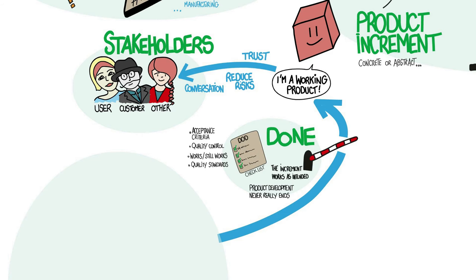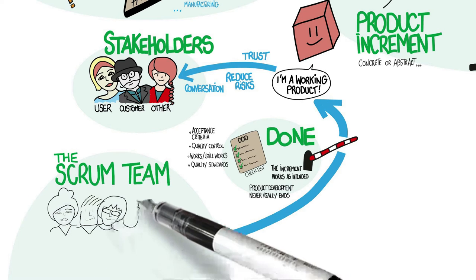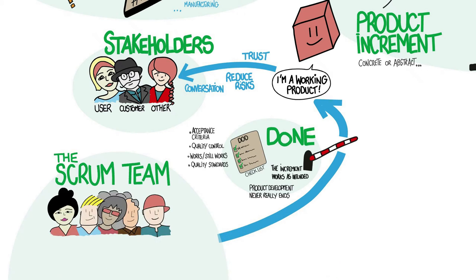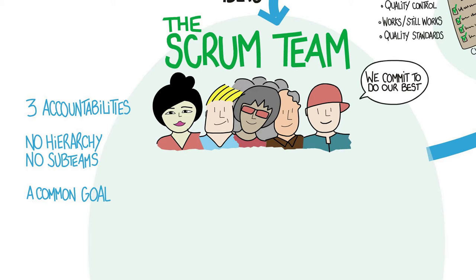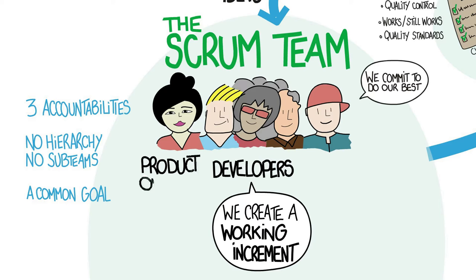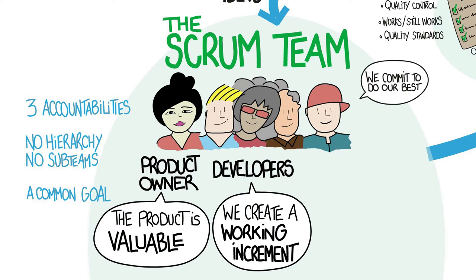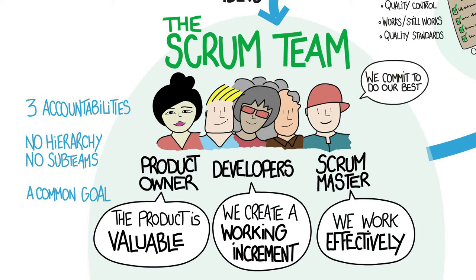The Scrum Team is accountable for creating a valuable working product increment every sprint. Ideas come into the team, the product owner sequences them, and the Scrum Team commits to do its best to turn the most valuable of those ideas into a working solution by the end of the sprint. Accountabilities define each member's contribution to the overall result. Scrum forbids hierarchies or sub-teams within the Scrum Team — there is one team working towards a common goal. The Scrum Team consists of developers, who are accountable for creating the increment; a product owner, who is accountable that the increment is valuable; and a Scrum Master, who is accountable that people can work and collaborate effectively.